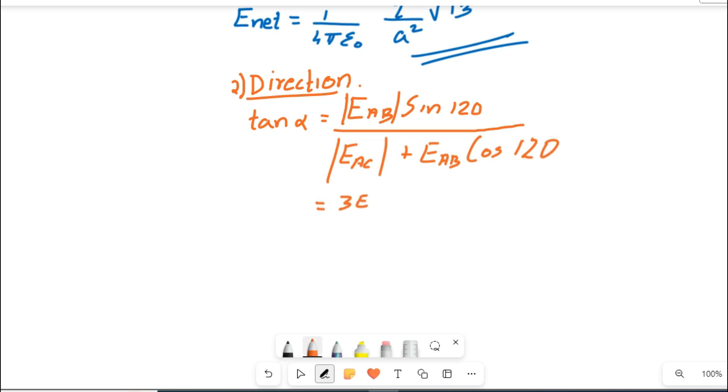So E_AB value we did already: 3E. And sin 120 we are going to apply here: root 3 by 2. Whole divided by E_AC value we did before: 4E, and E_AB already did: 3E, into cos 120 value we used in the previous part, that is minus 1 by 2.